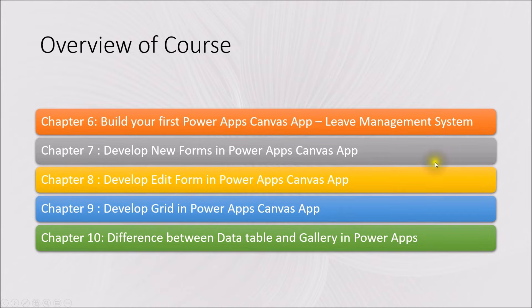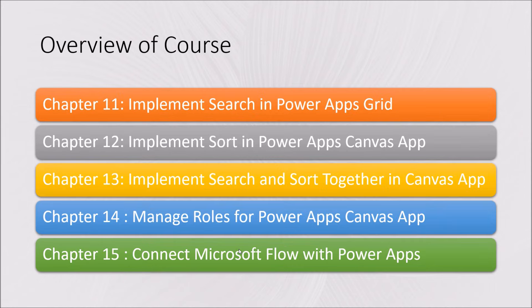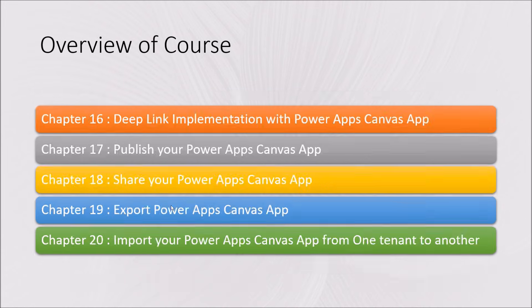Then we will develop new form and edit form into the Canvas app, and check how to develop a grid within PowerApps Canvas app. We will also explore different design components of the Canvas app and the difference between data table and gallery in PowerApps. After that, we will implement search and sort features with our Canvas app grid, then implement roles in PowerApps Canvas app to manage different live management roles. We will also connect our PowerApps with Microsoft Flow and talk about deep link implementation in PowerApps Canvas app.